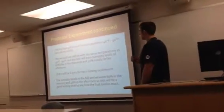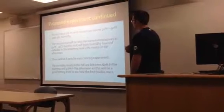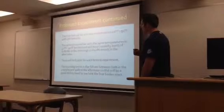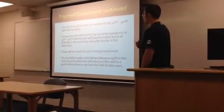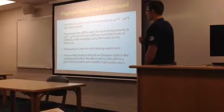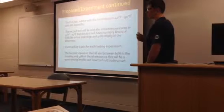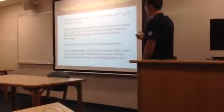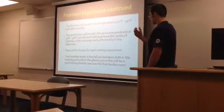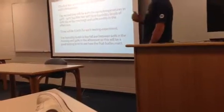The first test will be with temperatures 40 to 90 degrees with zero humidity. The second test will be between 40 and 90 degrees but with a humidity level of 60%, like the mornings and afternoons on a regular day. There will be six pots for each testing experiment. The humidity levels in the fall are between 60% in the mornings and 40% in the afternoons, so this will be a good testing level.